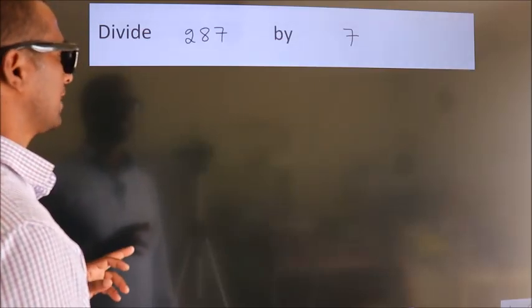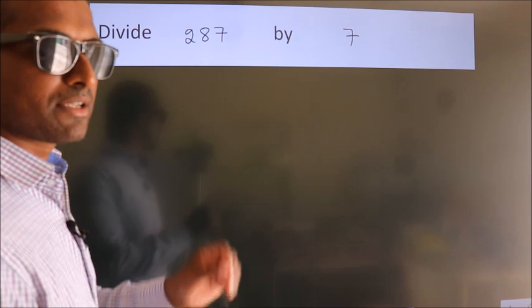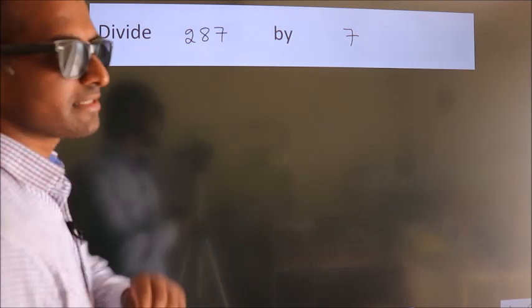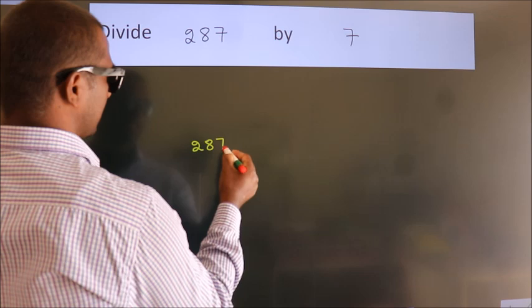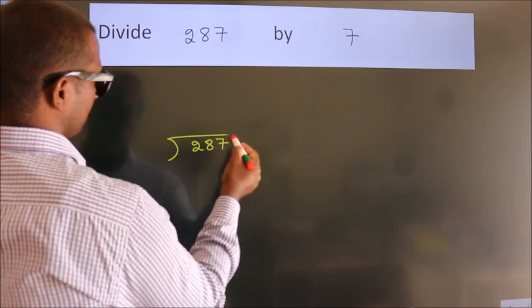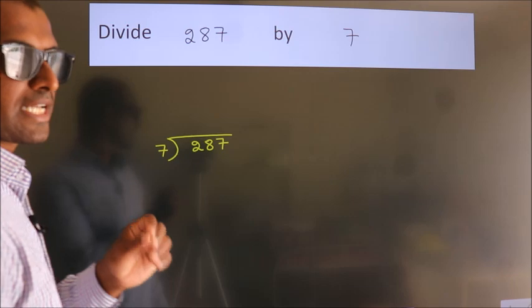Divide 287 by 7. To do this division, we should frame it in this way: 287 here, 7 here. This is step 1.